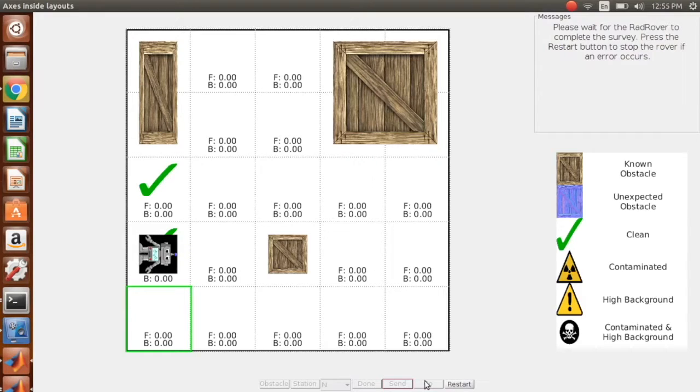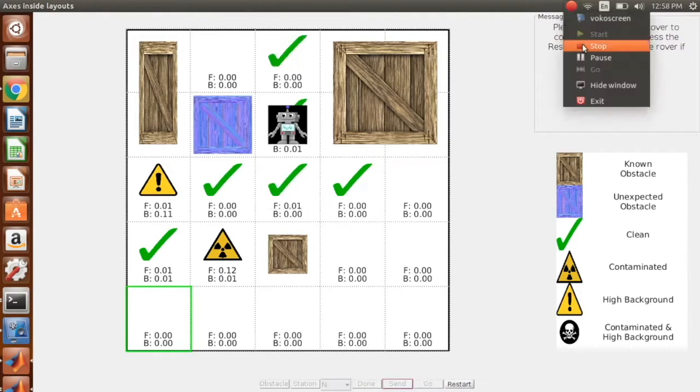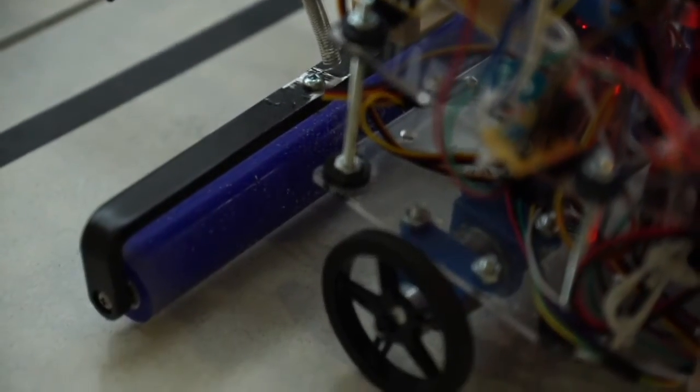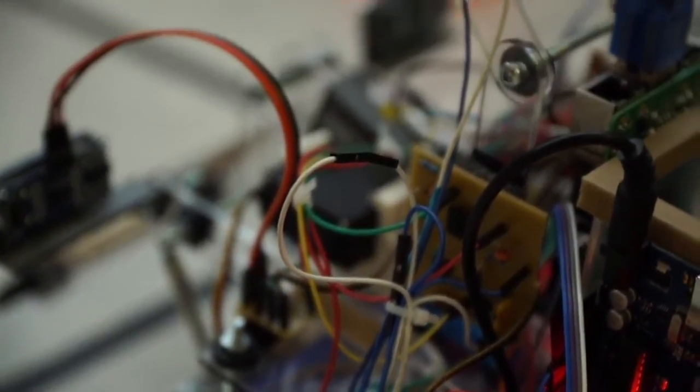While driving, the RadRover is also continually sending live updates to a computer that monitors where the rover has been, obstacles and radiation found, as well as floor and background count rates. When the user returns in the morning, he or she only needs to wipe the roller clean and save the recorded data.